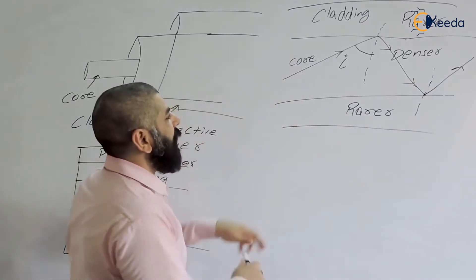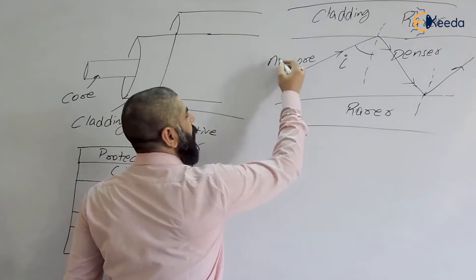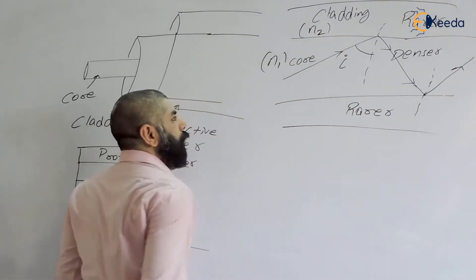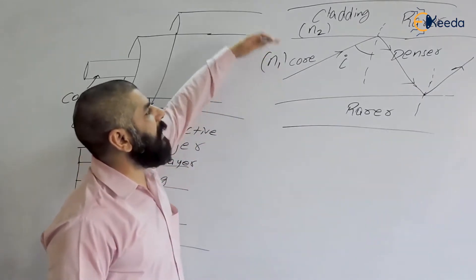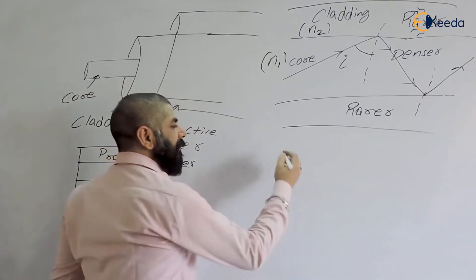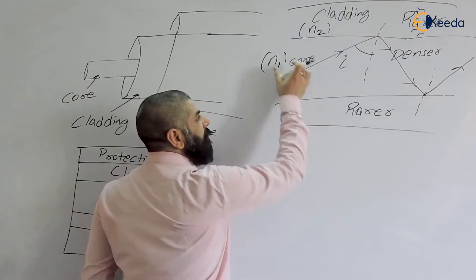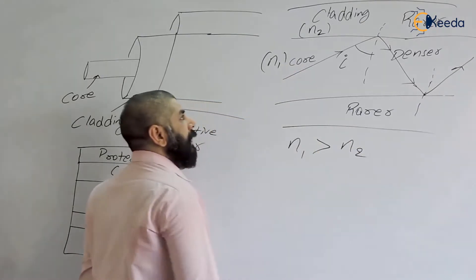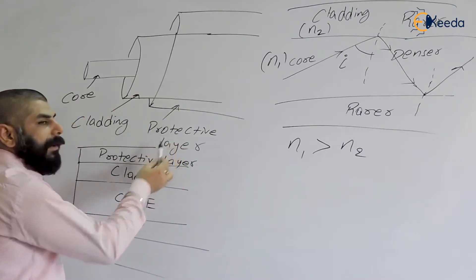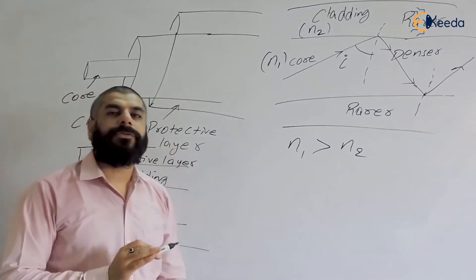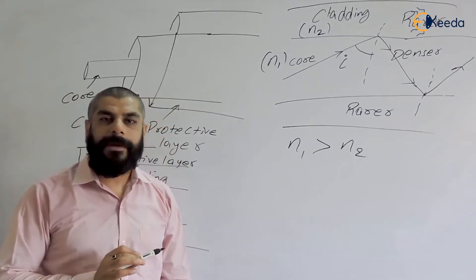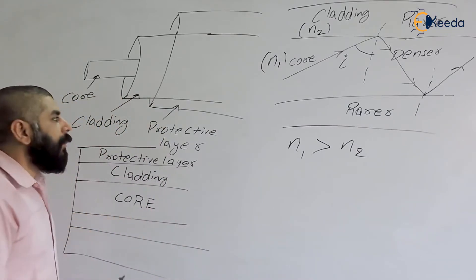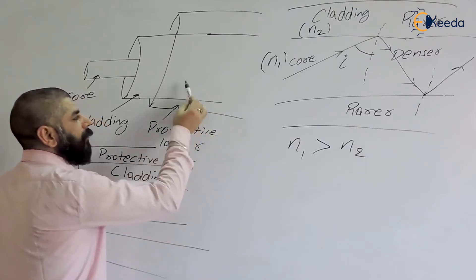For total internal reflection to occur, the refractive index of the core, denoted by n1, must be greater than the refractive index of the cladding, denoted by n2. So core must be the denser medium and cladding must be the rarer medium. The function of the protective layer is to protect the optical fiber from environmental effects such as temperature, pressure, and other environmental factors.